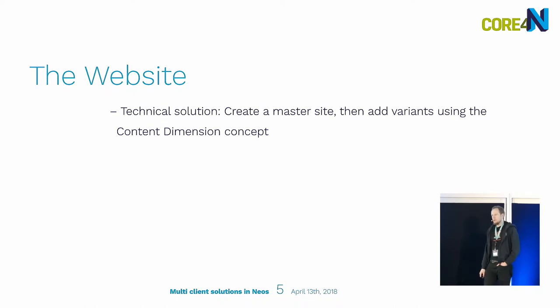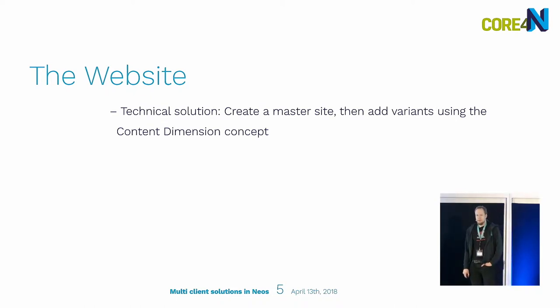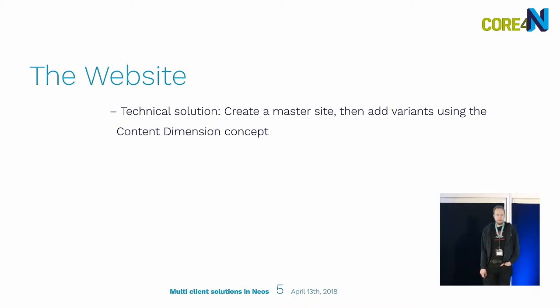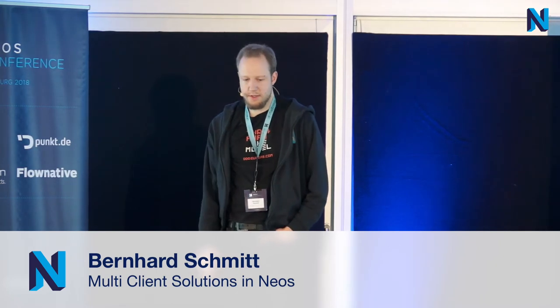There's one master site as the fallback, and for each member of the union a new content dimension value is added so they can override content. When the union publishes new content, this is automatically published to all member sites as well.